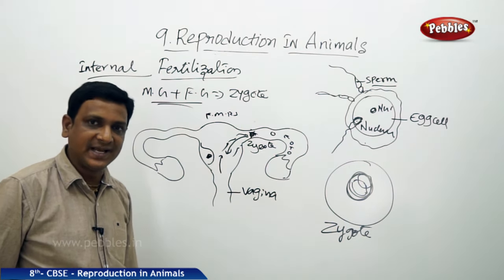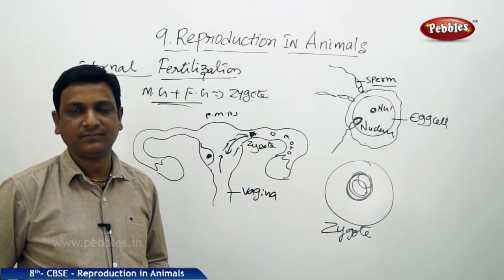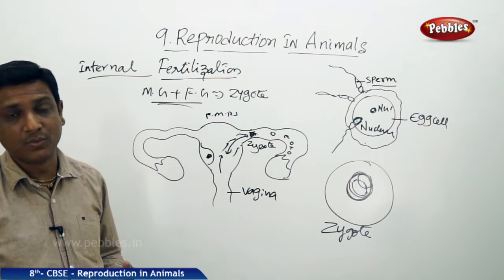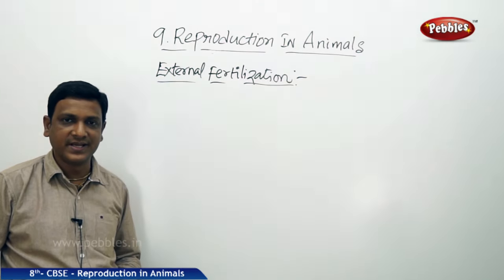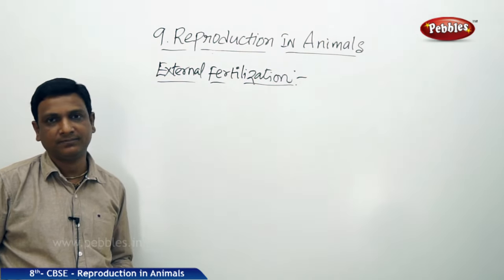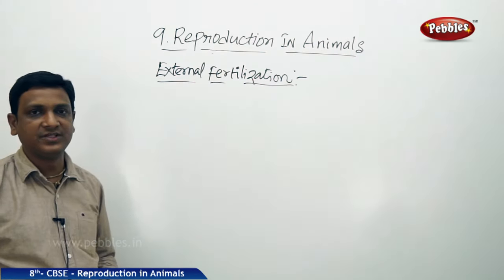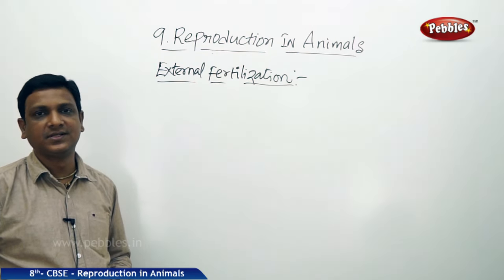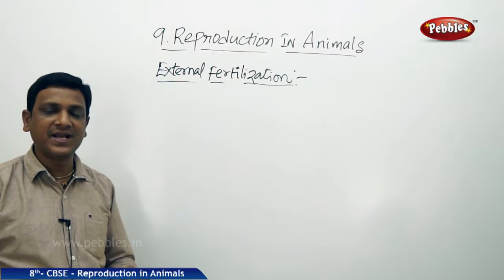In certain animals, fertilization takes place outside their bodies — not inside the body. In certain aquatic organisms like fishes, starfishes, and frogs, the fertilization takes place outside their bodies. This is different from internal fertilization, which we observed in humans, cows, and dogs, where fertilization takes place inside the body of the female.